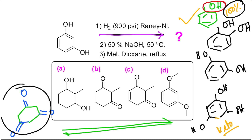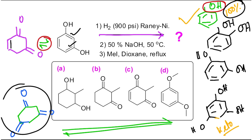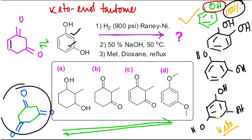In phloroglucinol it mainly remains as the tri-keto form. But resorcinol is in equilibration between its keto form and enol form - these two double bonds will vanish, leaving only one double bond remaining. So resorcinol is in equilibrium with its keto tautomers - this is keto-enol tautomerism. I have already discussed a dedicated video on this topic; please visit it for better understanding.